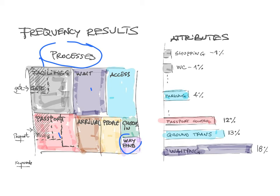So facilities is thought to be more important than wayfinding for passengers. Similarly, keywords such as 'gate' appear a significant number of times. Looking at attributes, ground transport was found in 13% of the tweets and passport control in 12%. At the other end, shopping and WC were mentioned in only 1% of tweets, with parking in between at around 4%.